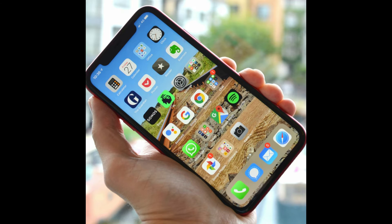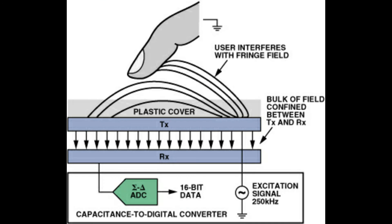The screen follows wherever you touch. For example, when you are scrolling through social media, the sensor detects your finger going from left to right or up to down, and the charges from the capacitance follow your thumb. That is why the capacitive sensor is very important, especially in this age of technology.